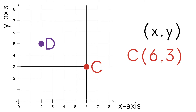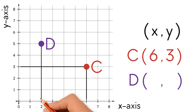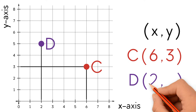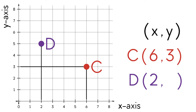Now let's find the ordered pair for D. We start with the x-coordinate — we look down at the x-axis and we see that the x-coordinate is 2. Let's find the y-coordinate. We look to the left at the y-axis and we see that the y-coordinate is 5. So the ordered pair for D is (2, 5).